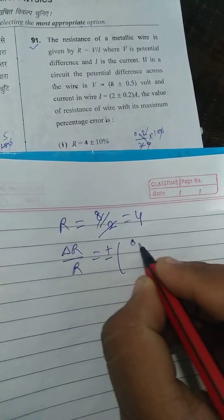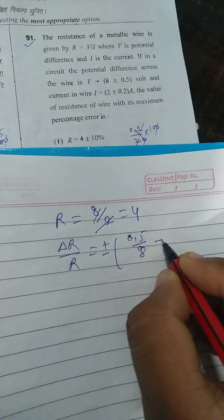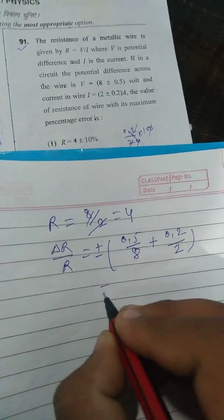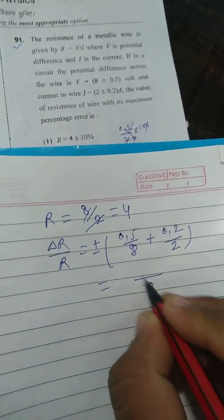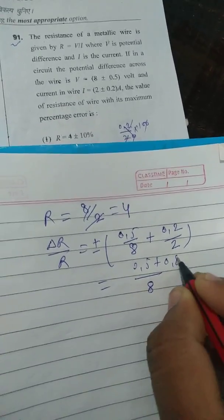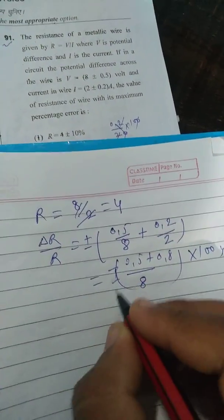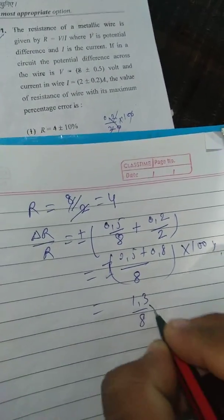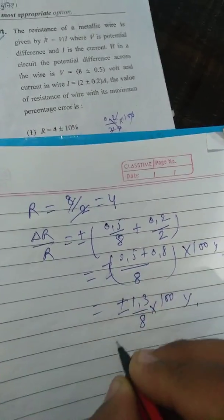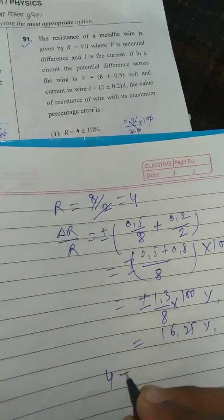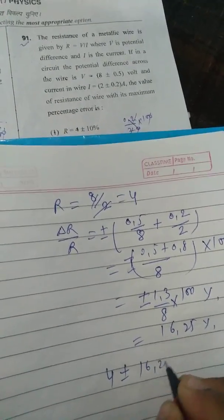Error in R is given by the relative error formula: error in V by true value of V plus error in I by true value of I. On solving, that is 0.5 by 8 plus 0.2 by 2, giving 16.25%. So R has the value 4 plus or minus 16.25%. The correct option is option number 2.